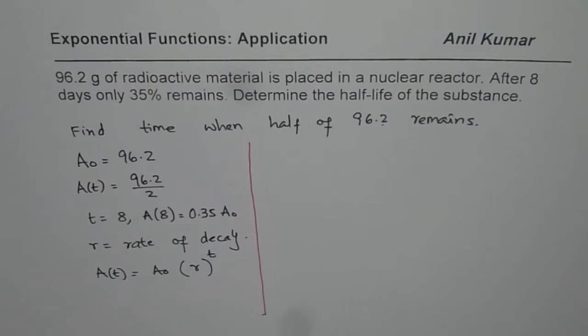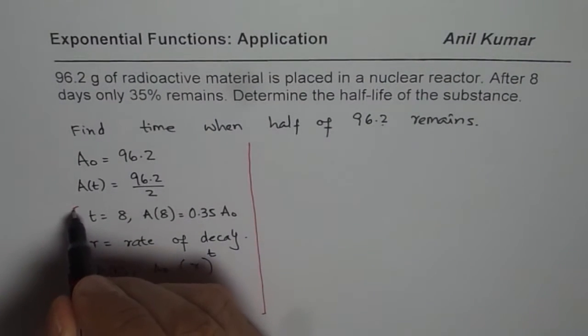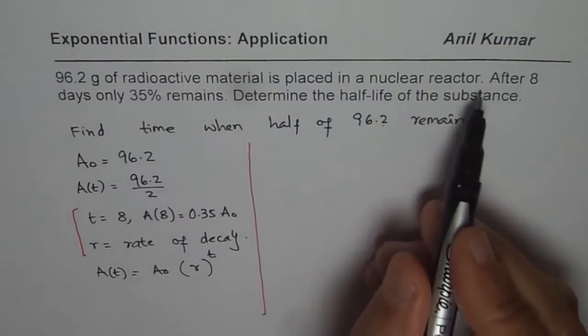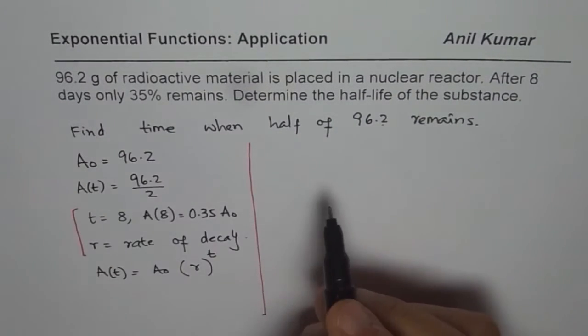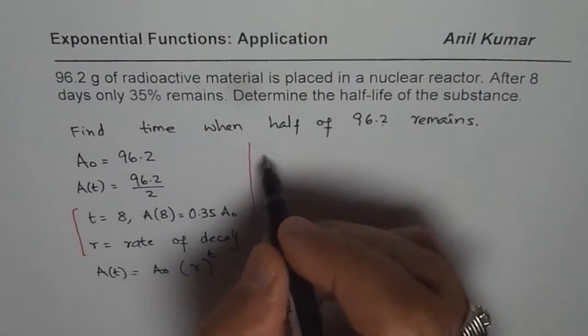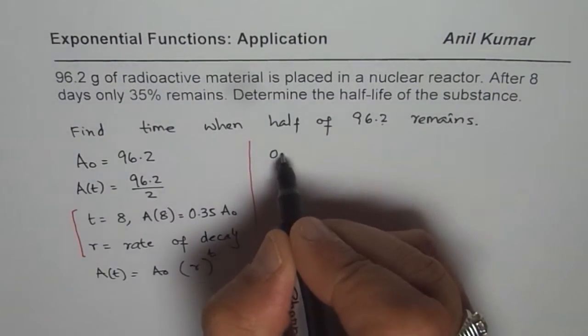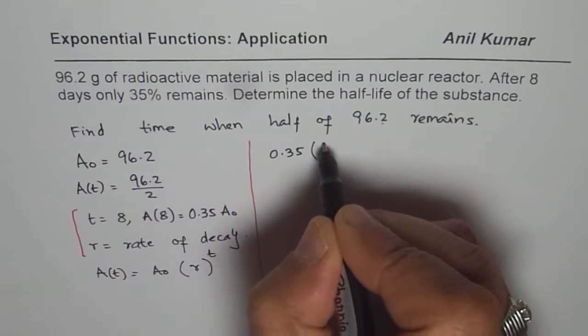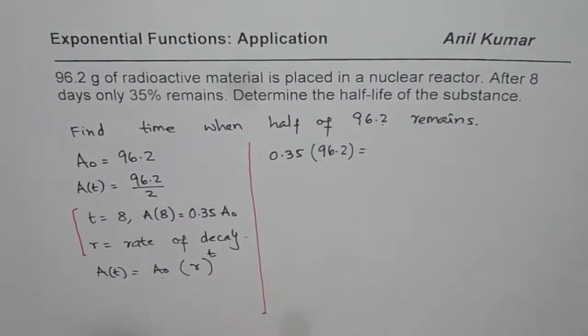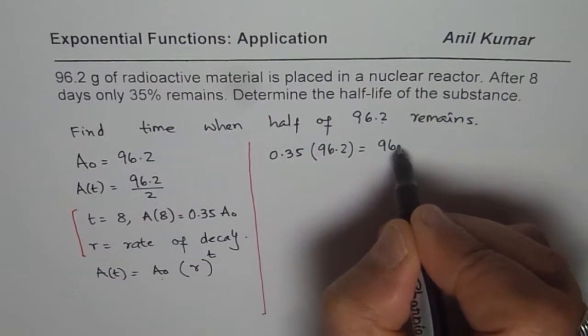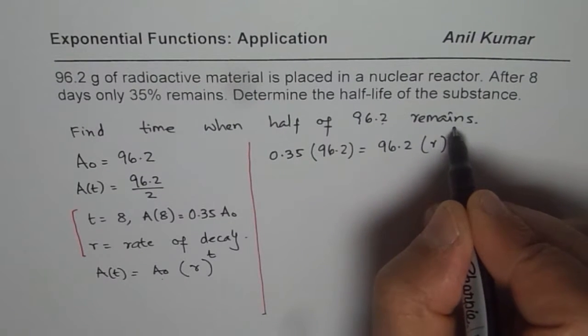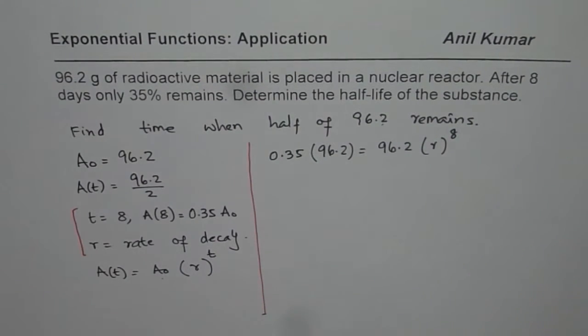Now we will first apply this condition given to us. So what we are given here is that after 8 days, 35% remains. 35% of 96.2. So what remains is 0.35 of 96.2 remains. Original equation, A0 is 96.2 R to the power of t. t is 8 for us. So at this time, t is 8 for us.